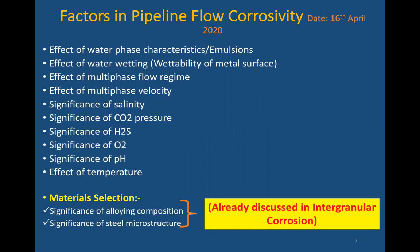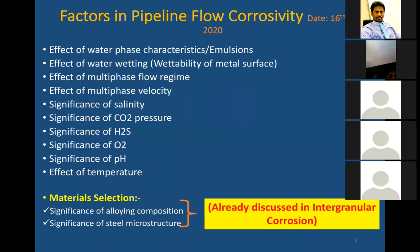Based on the multi-phase flow regime, what type of corrosion may happen will be discussed. Multi-phase flow velocity: if your flow velocity is high then corrosion will be high; if the flow velocity is low, corrosion may be slow — it depends on flow characteristics. Next, significance of salinity: if the fluid flowing through the pipeline is more saline, then the corrosion rate as well as the corrosion of the pipeline will be affected.